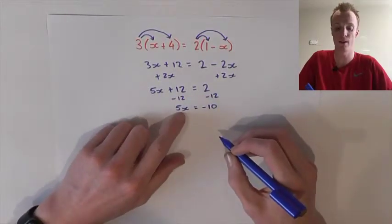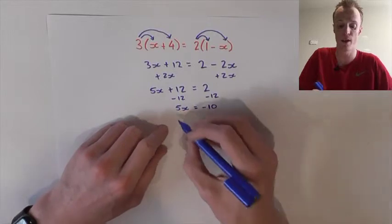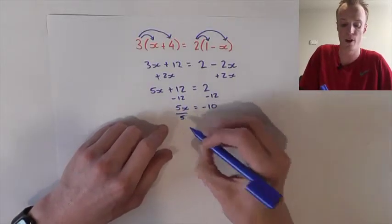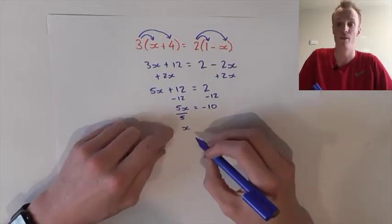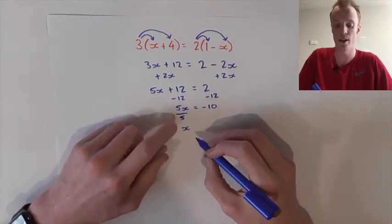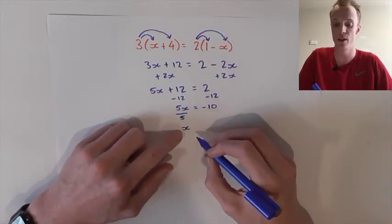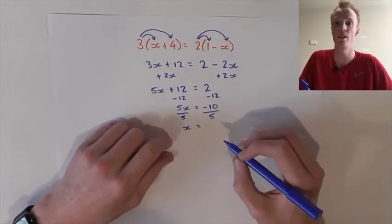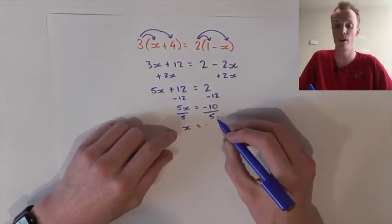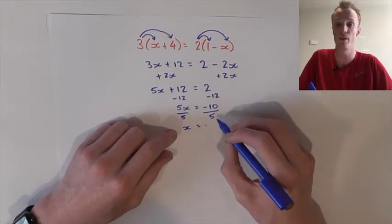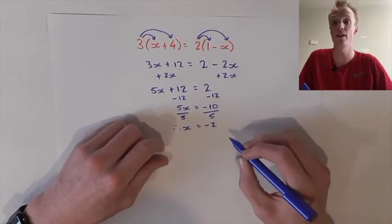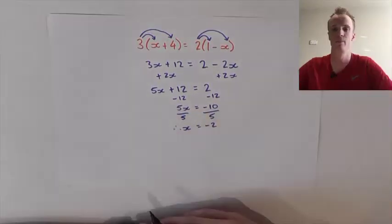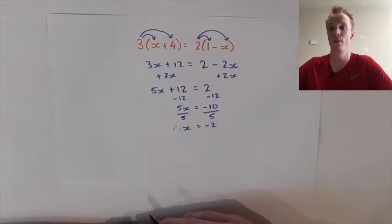Finally, we must isolate the x value by dividing by 5. We divide by 5 because this 5 is multiplying the x. 5 divided by 5 will cancel out and leave us with x on the left-hand side. To keep things balanced, on the right-hand side I must also divide by 5. Negative 10 divided by 5 will be negative 2. Therefore, we've found that our x value is negative 2.